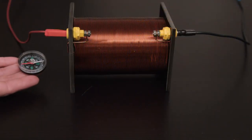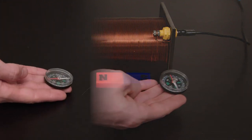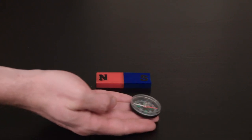This air core solenoid can act just like a bar magnet, repelling north and attracting south.